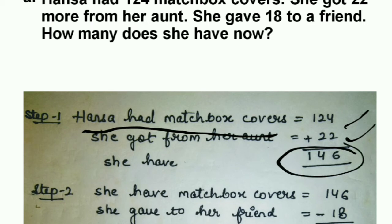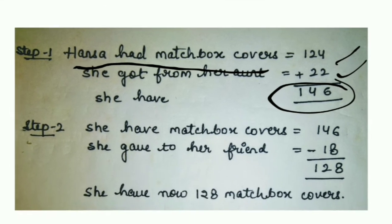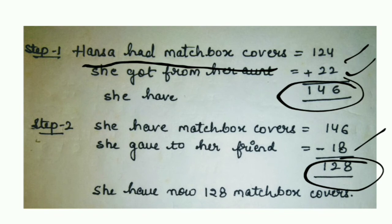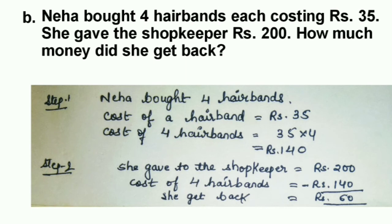She now has 146 matchbox covers. In step 2 she gave 18 to her friend: 146 minus 18 equals 128. So she has 128 matchbox covers now.